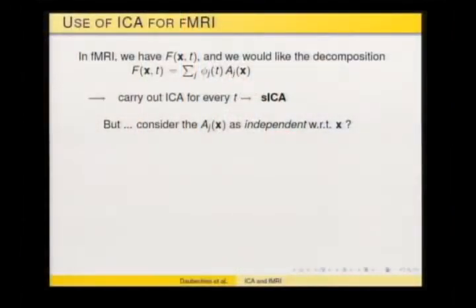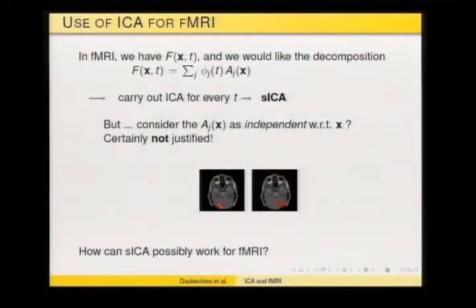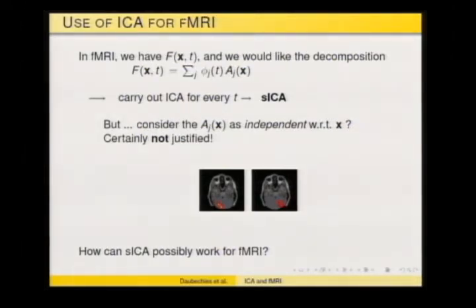Going back to what it means: can you really think of these spatial components A_j(x) as independent? After a couple of weeks of talking with people from functional MRI, I said, 'Come on — it's impossible.' If you look at two different activation functions happening in different places, they're not independent — one lives where the other doesn't. If I condition on one being a certain value, the other one is zero there. How can it possibly work?